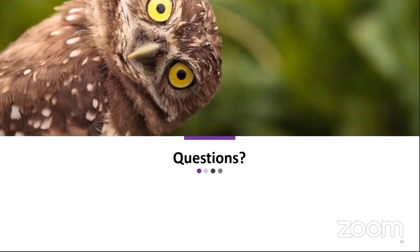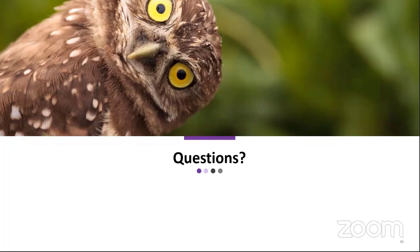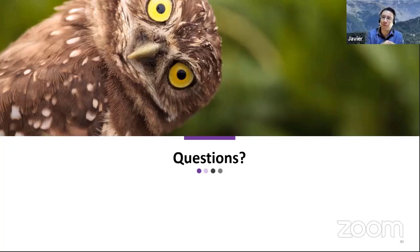Q: Will there be an Event Grid viewer natively like Service Bus Explorer within the portal? It's a great feature ask — please vote for it. In any Event Grid documentation article, go to the bottom, click Feedback, and provide it. This should already be there as a voteable feature request, and we can see the number of people interested. As those asks come in, we can prioritize that feature.